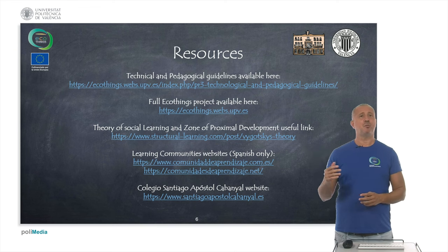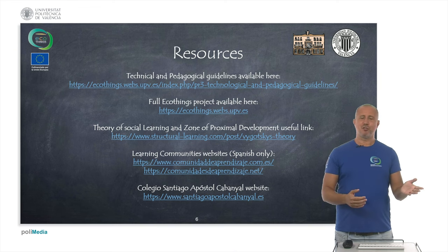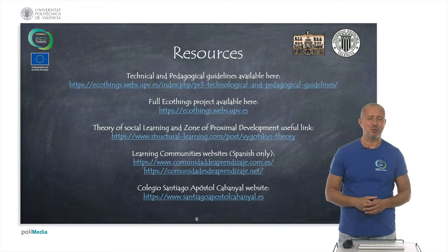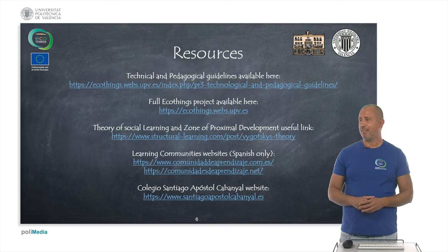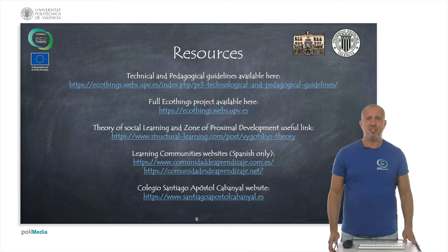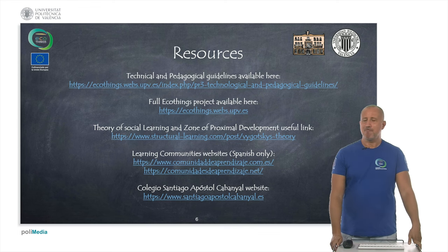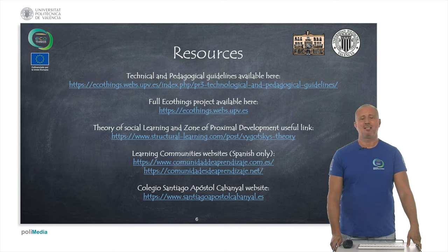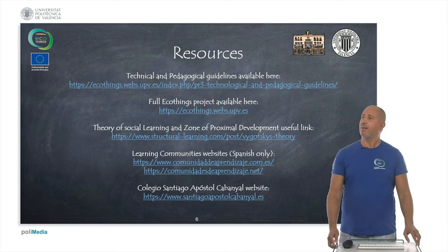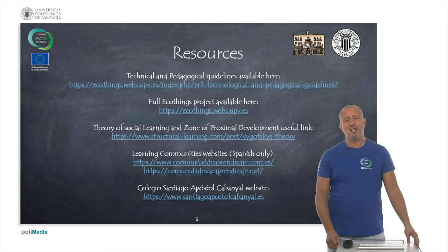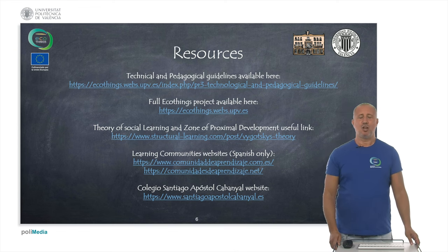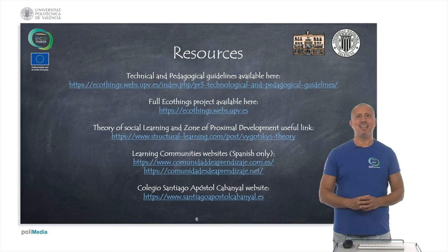The second link is to the project itself, where you will find far more information including this mock, pictures about the LTTA, how the ecotechnology courses were structured, and even spin-off activities linked to the project. The theory of social learning is also highlighted there if you want to delve into it. If you think learning communities are a valid option for your educational purposes, you can find the link here — this solution is widespread in Spain and can be a powerful ally, especially if you work with kids at risk of social exclusion. Finally, our school website santiagoapostolcabañal.es, where you can verify that EcoThings is just one of the many projects our school is working on, and how we work strategically with a network of more than 80 collaborators.